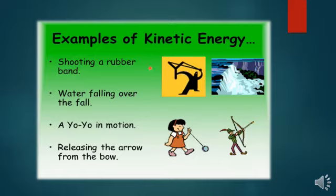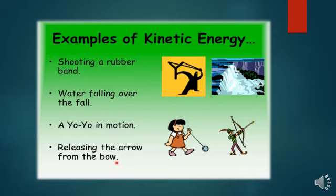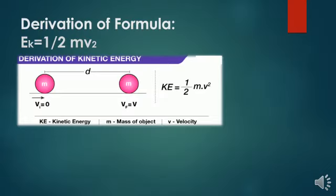Other examples include: shooting a rubber band, water falling over a waterfall, a yoyo in motion, and releasing an arrow from a bow — all are examples of kinetic energy. From these examples, we conclude that whenever a body is in motion, it has kinetic energy.